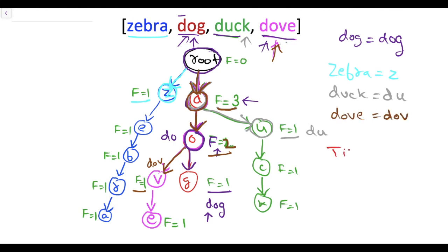The time complexity of this solution is O(sum of lengths of all strings), because finding the unique prefix for a single string takes time proportional to its length. This is how we solve this problem using a trie in efficient time complexity.